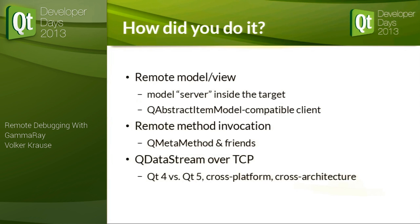GammaRay is heavily model-view-based. We started that in a time where we thought the proxy model is the answer to every question — it made the code somewhat complex in some scenarios, but it really helped us now. Model-view gives us a very nice separation between the server-side core part and the actual UI that runs in a separate process. All you need is a QAbstractItemModel that uses, as its data source, a model in a separate process. Easy — in theory.